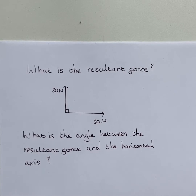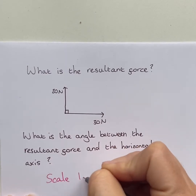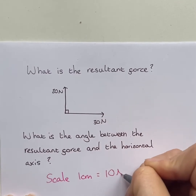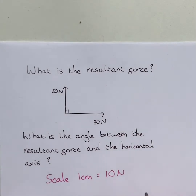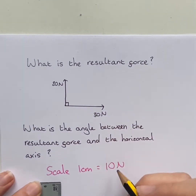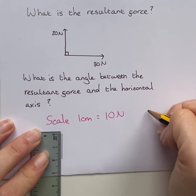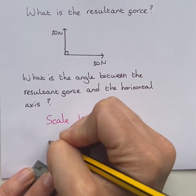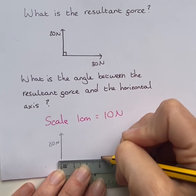Our first step is to decide upon the scale we're going to use. I'm going to use a scale of 1 centimetre equals 10 newtons, and then redraw the diagram to scale. So firstly, I need my 20 newton force going horizontally, which becomes 2 centimetres, and then my horizontal force of 30 newtons, which is going to be 3 centimetres.